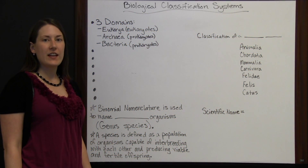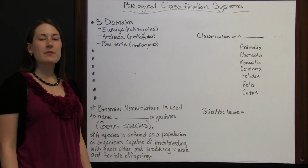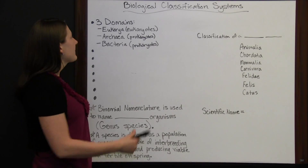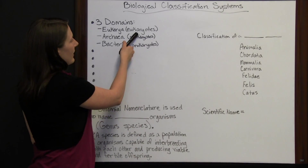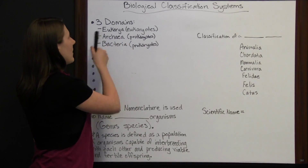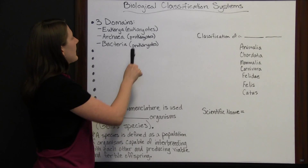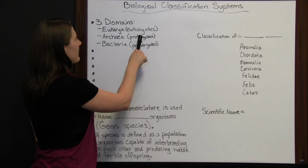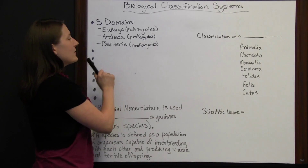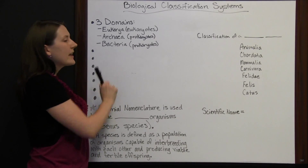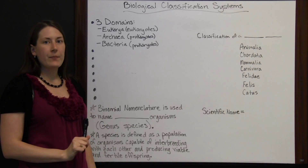Biological classification systems divide organisms into three domains. Eukaryotes belong in Eukarya, while prokaryotes are divided into the domains Archaea and Bacteria.